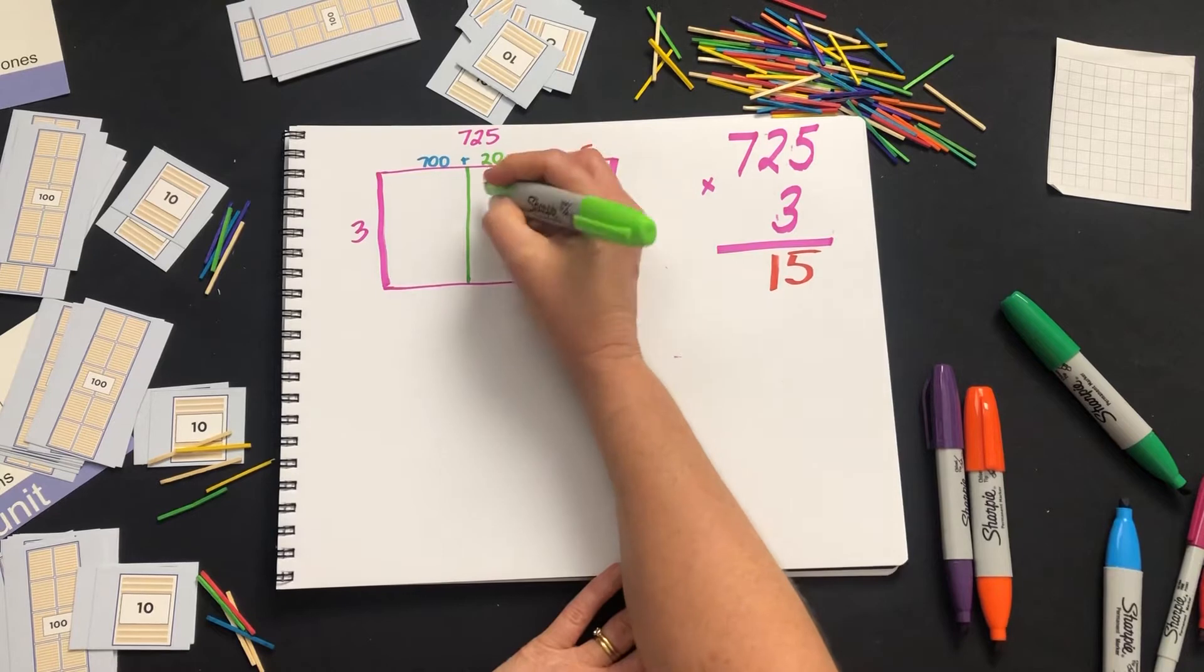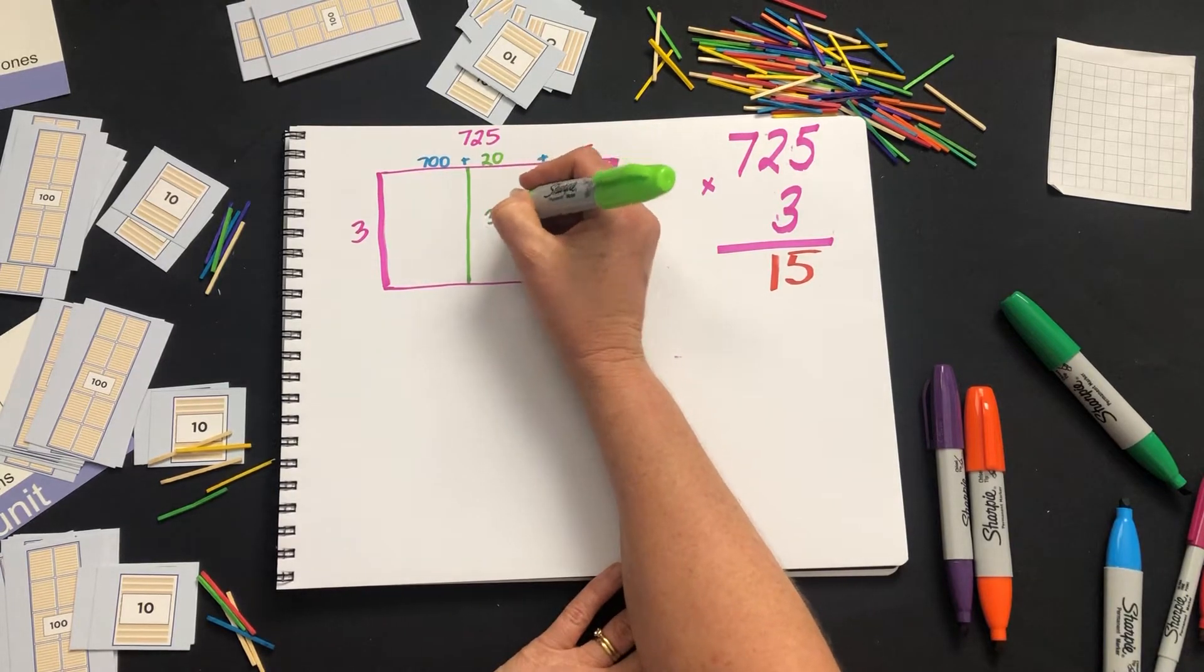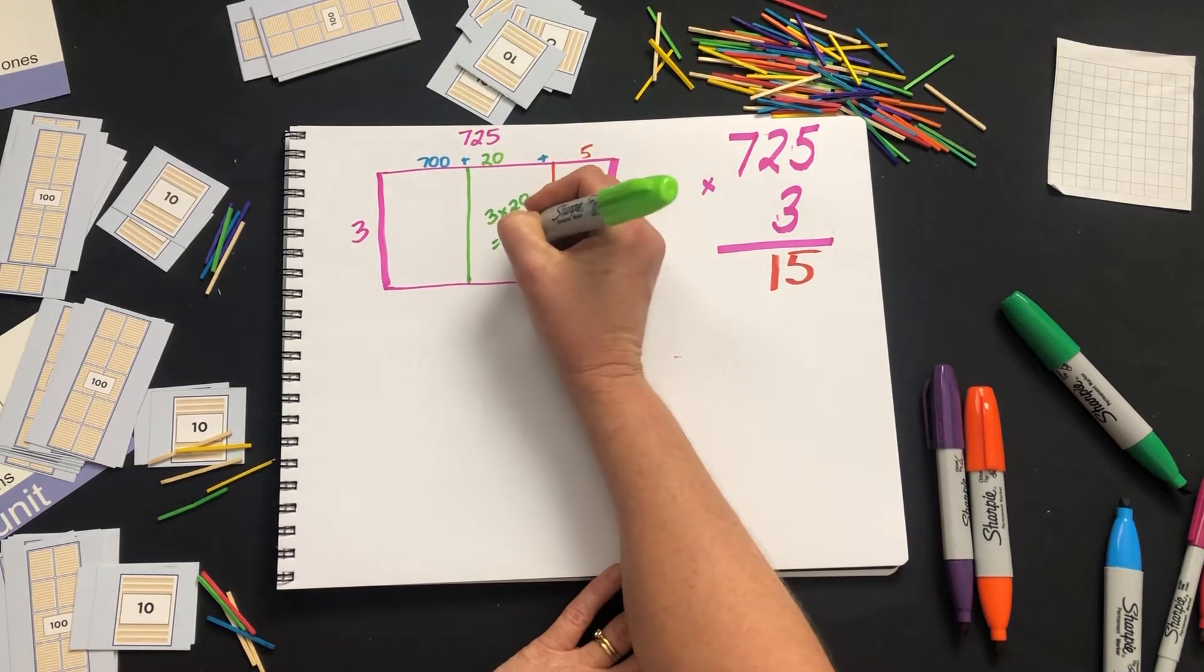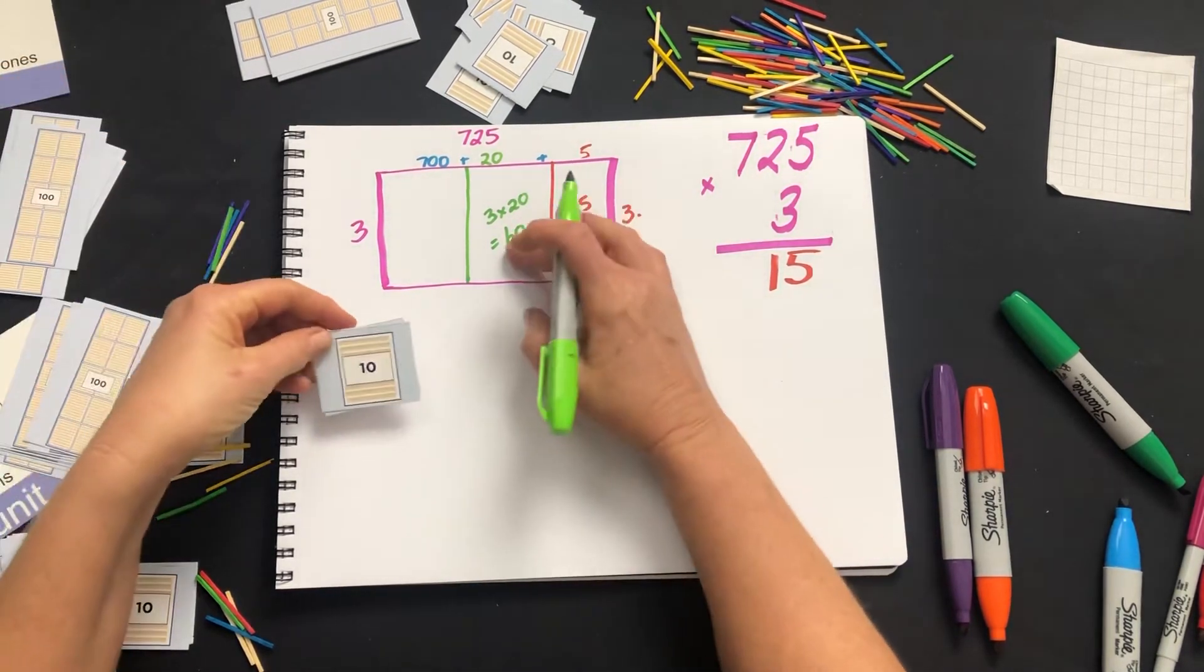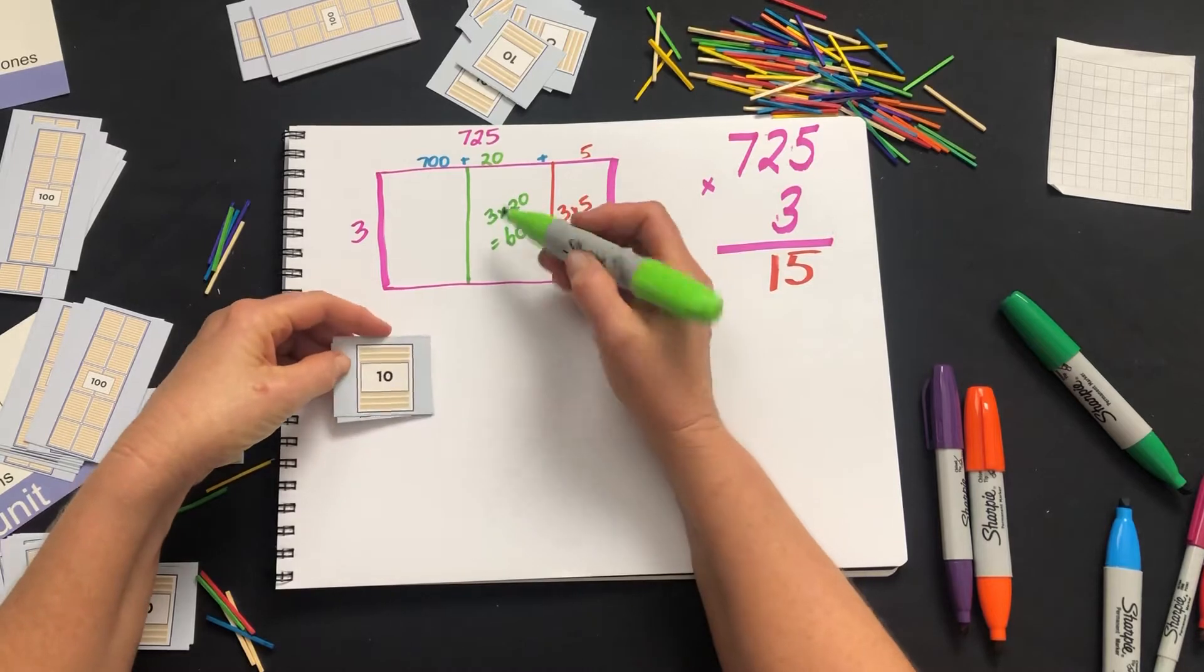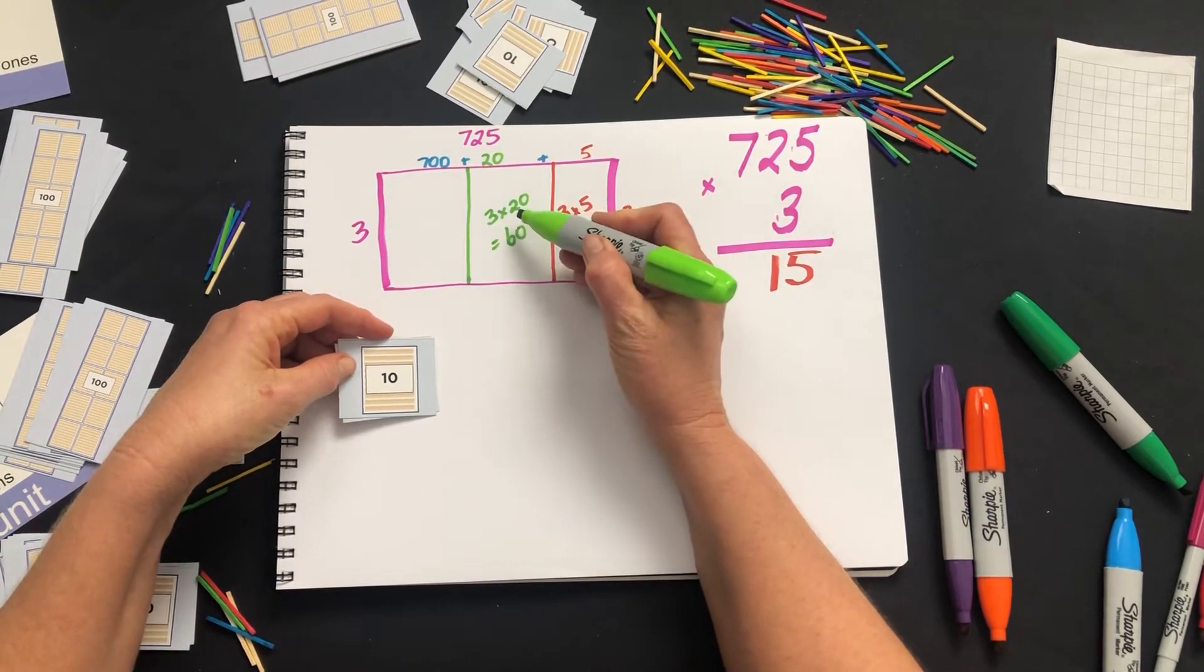The next one is 3 times 20, which is 60. If you need to develop that skill rather than just saying 3 times 2 is 6 and you add a 0, please avoid that at all costs if you can.